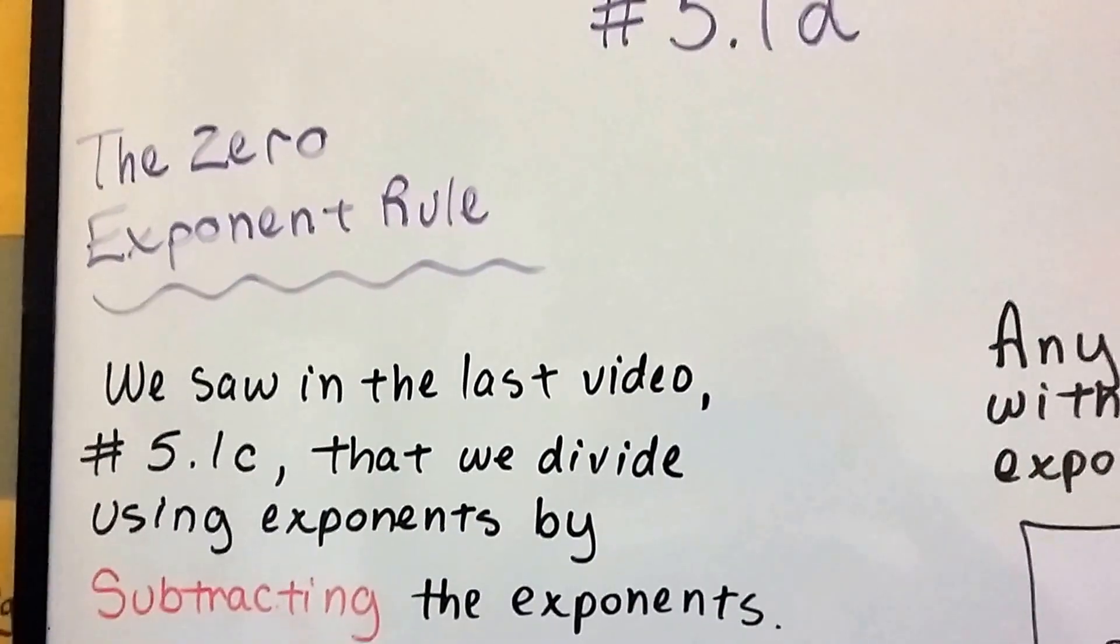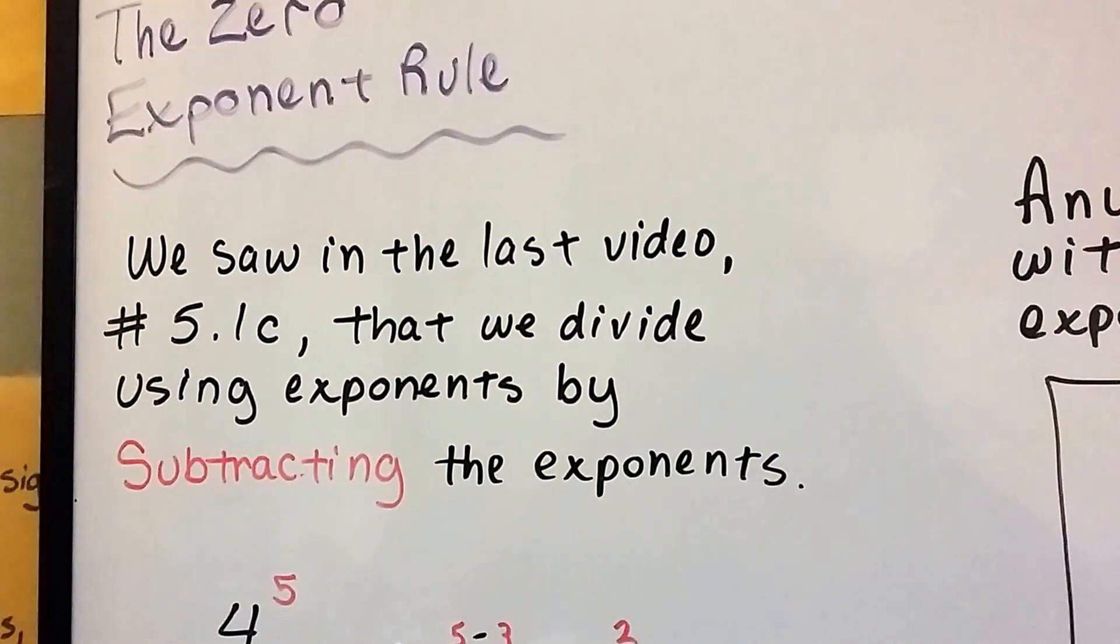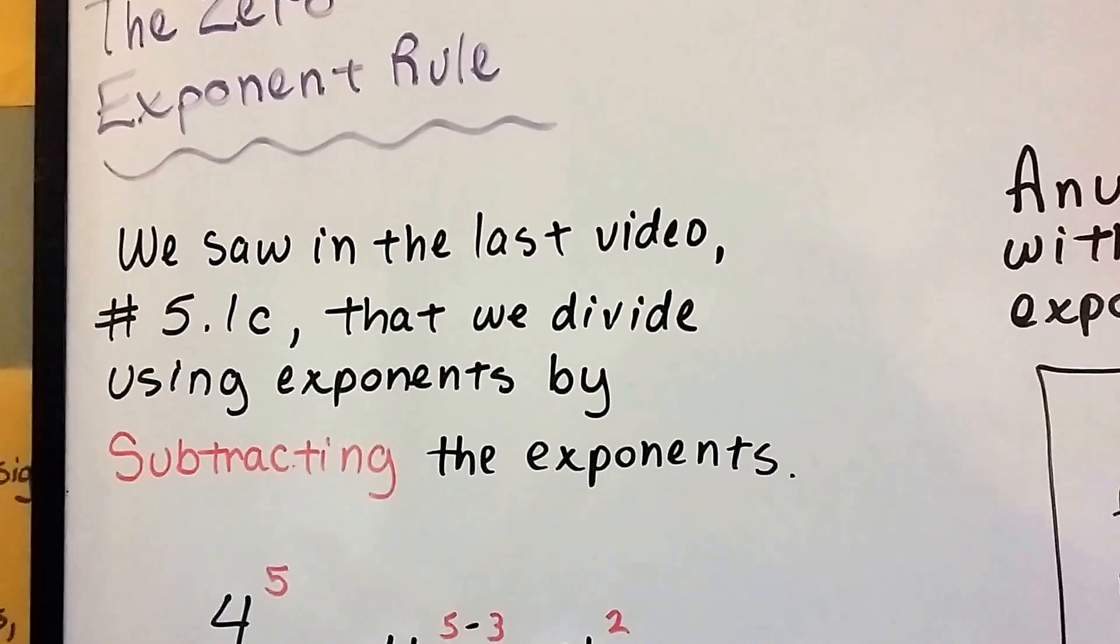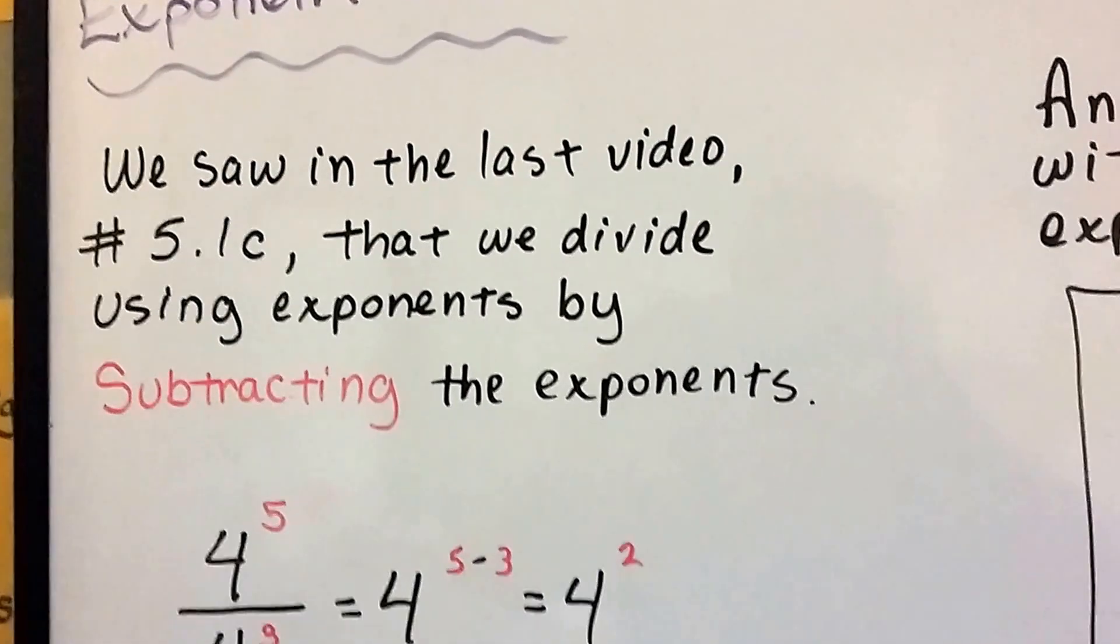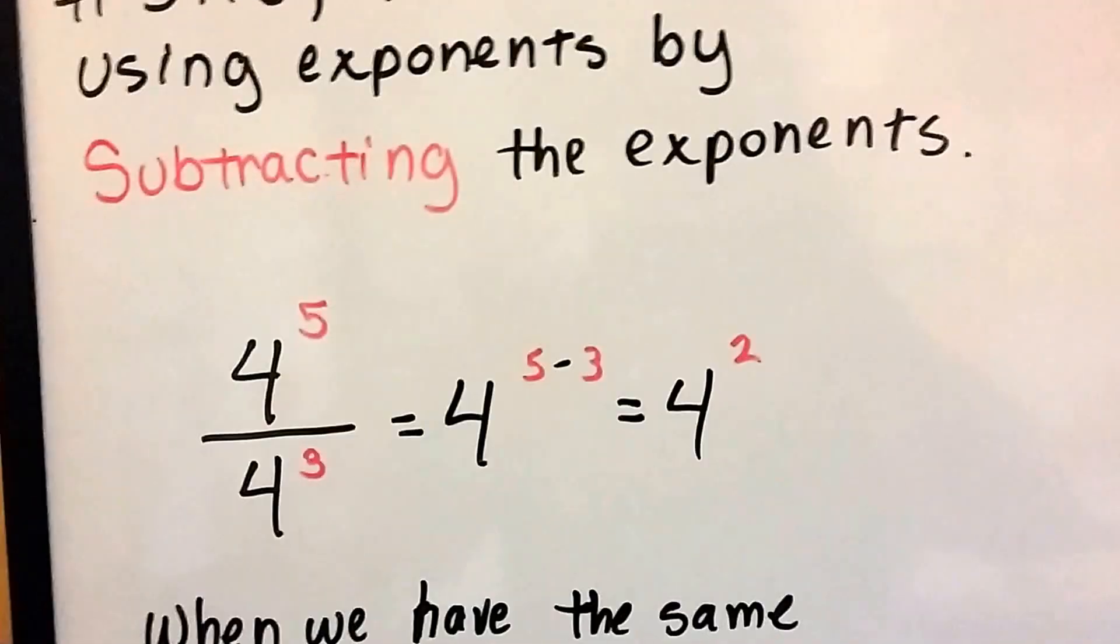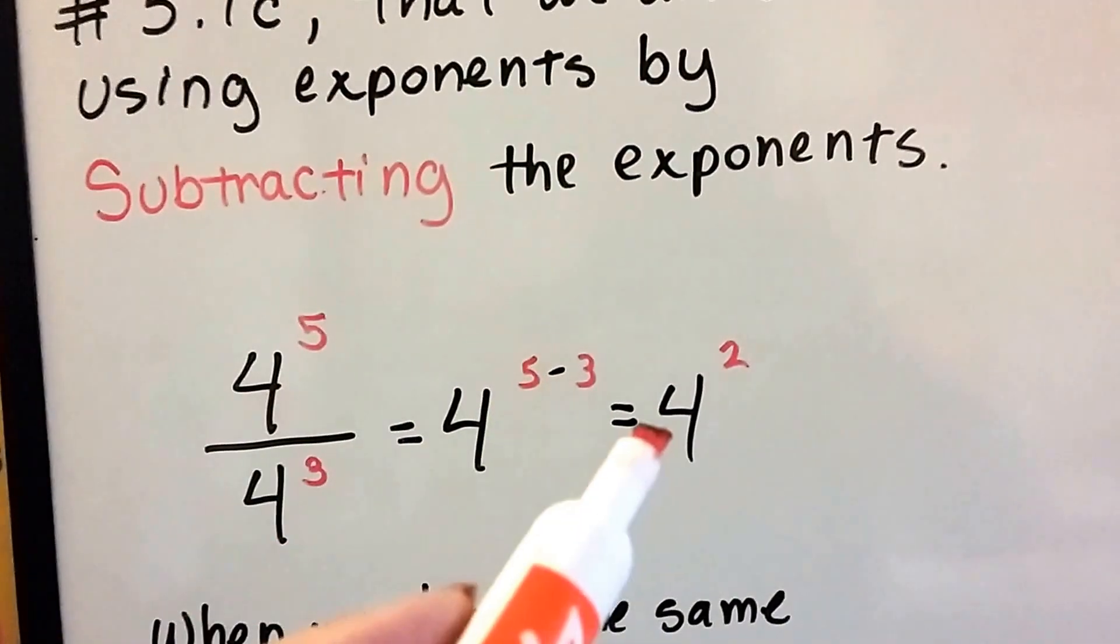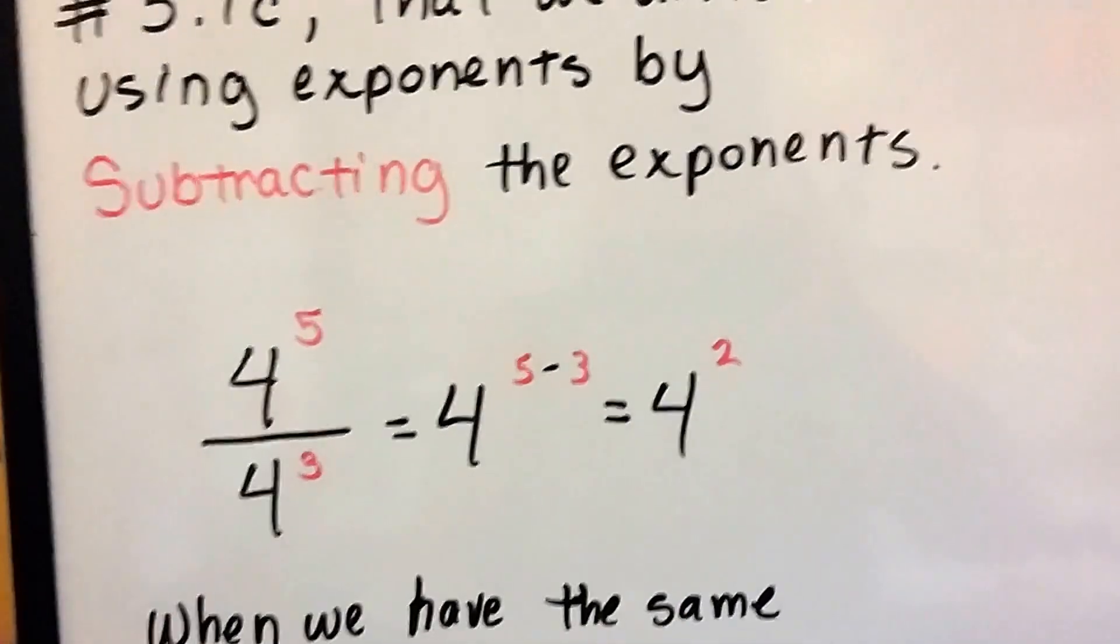We've been talking about exponents and we saw in the last video, 5.1c, that we divide using exponents by subtracting the exponents. So to divide 4 to the 5th power by 4 to the 3rd power, we just subtract the 3 from the 5 and that'll give us 4 to the 2nd power.